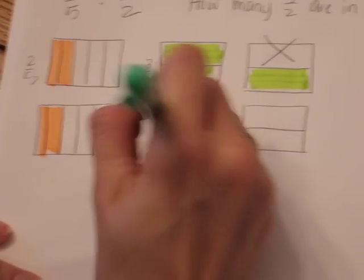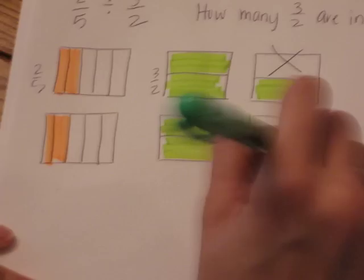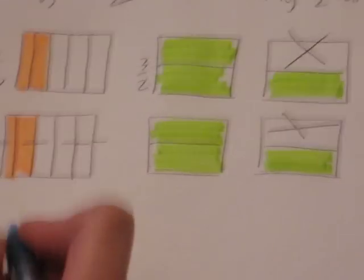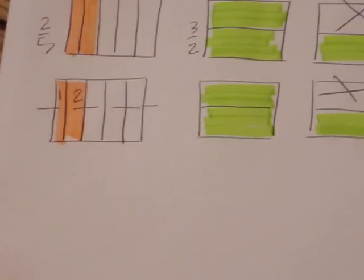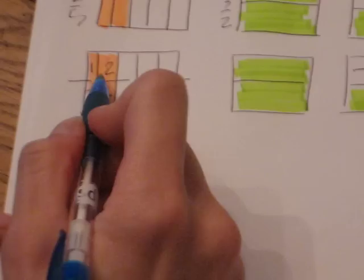You always want to look to your denominator because that's the size piece that we're discussing. We're discussing fifths and halves. So you want to take the fifth and you want to cut it into half. So now we have one, two, three, four out of ten pieces.